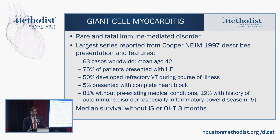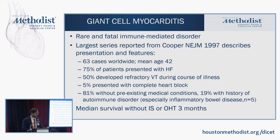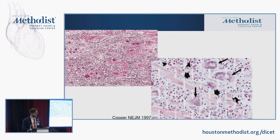Giant cell myocarditis is a rare but important disease — you may encounter a patient whose life you can save with knowledge of it. It's a rare, fatal, immune-mediated disorder. The largest series — over 20 years old, from Leslie Cooper, New England Journal of Medicine — describes 63 cases from a worldwide registry, with a mean age of 42. Most patients present with heart failure; about half will have refractory VT, 5% will have complete heart block, and almost one in five will have another autoimmune disorder — particularly inflammatory bowel disease. The median survival without transplant or immunosuppression is only several months.